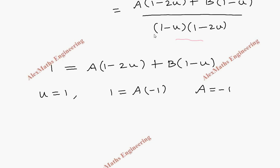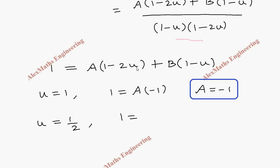Similarly, taking u = 1/2: 1 = B·(1 - 1/2) = B·(1/2), so the value of B is 2.